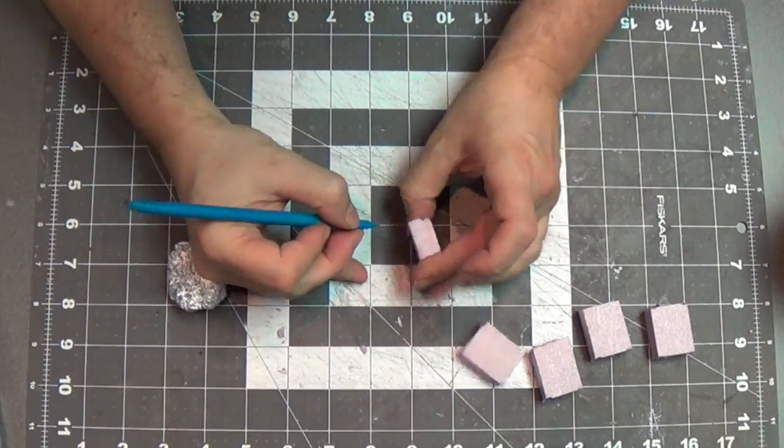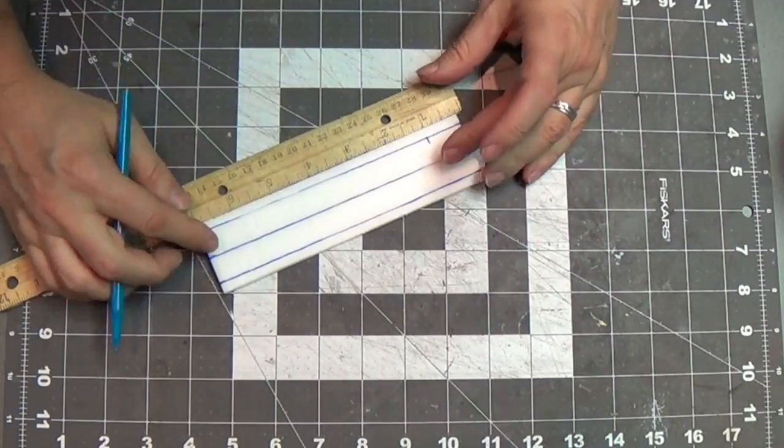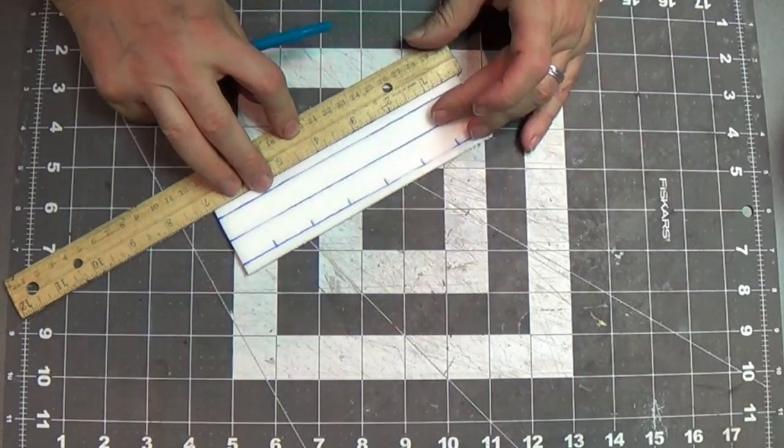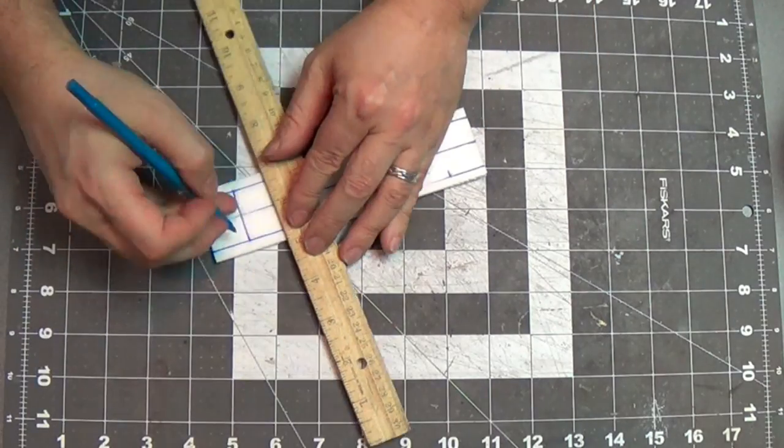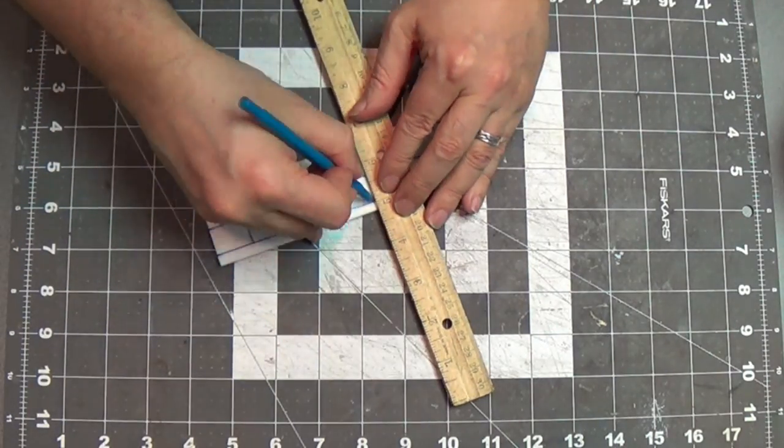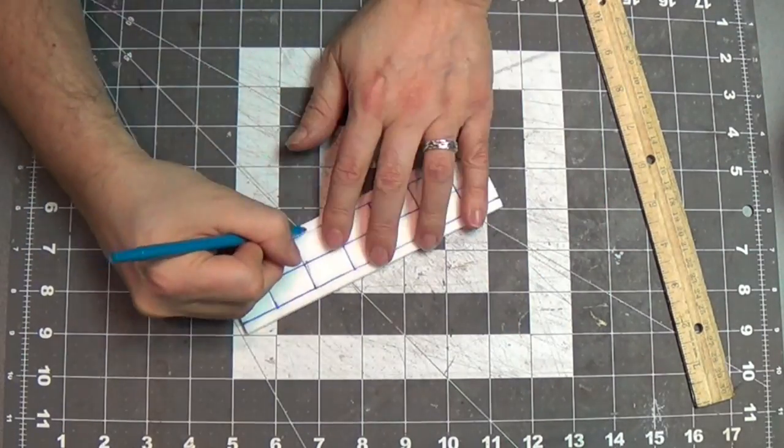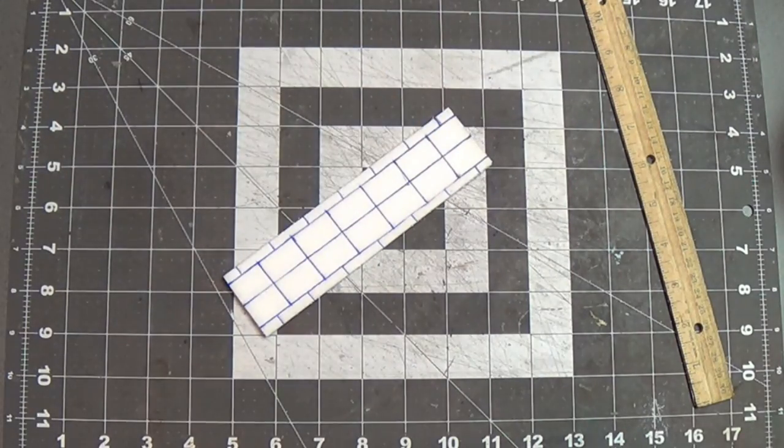And I used some aluminum foil there, you can see, to add some detail. If you don't know that trick, just push it into the surface. Now this is a piece of foam core I've cut. It's an inch and three quarters wide. This is for the walkway on top of the crenelations. I'm adding stonework here and I've taken the paper off and I'm just pushing into the foam core itself.